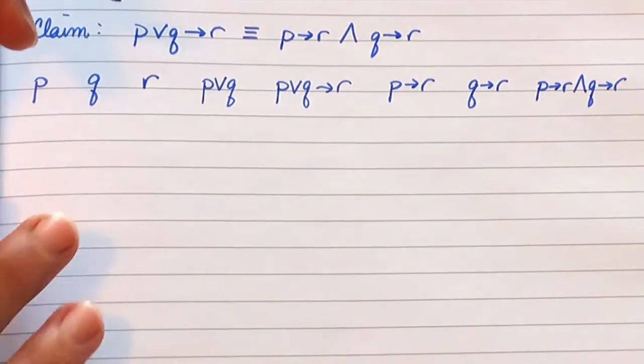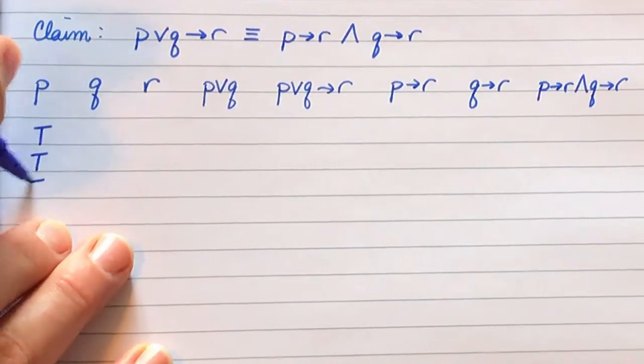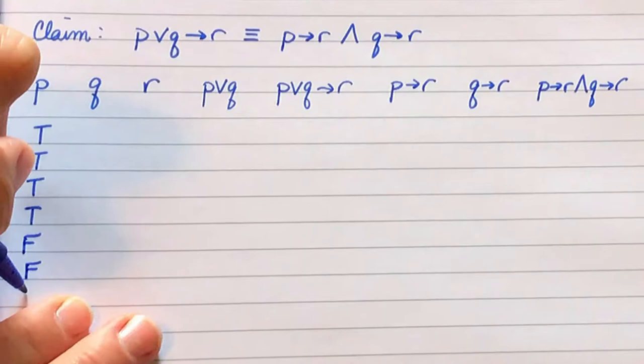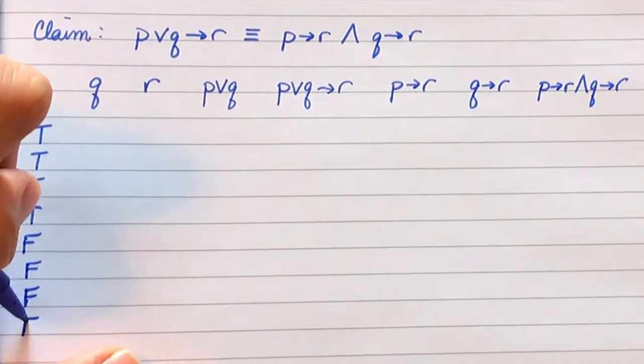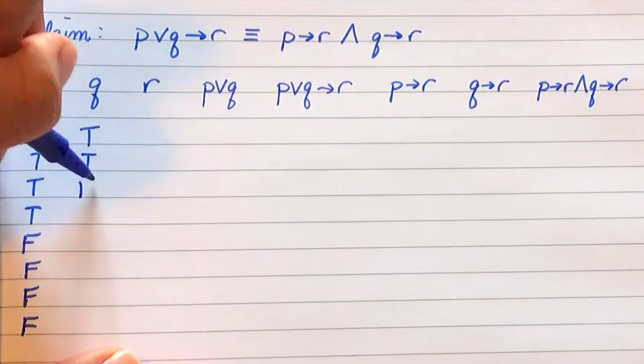We are going to go in the standard order here, which means that P is going to have four T's followed by four F's. Q is going to go in groups of two: T, T, F, F, T, T, F, F.